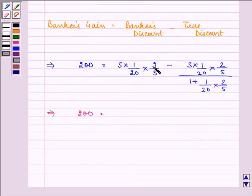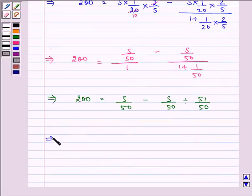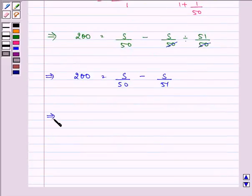We have 200 equal to S upon 50 whole upon 1 minus S upon 50 upon 1 plus 1 upon 50. Further, we have 200 equal to S upon 50 minus S upon 50 divided by 51 upon 50. That is, 200 is equal to S upon 50 minus S upon 51.